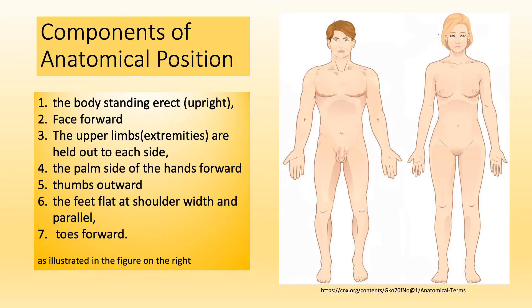What are the components of anatomical position? Let's start from the top and go to the bottom so we will not forget anything. The body is standing erect or upright. Face forward. Upper limbs or extremities are at each side. Note: I said upper limbs, not arm — because arms are a different body part. Arms refer in anatomy to the body part from shoulder to elbow. However, upper limbs refer to the body part from shoulder to end of the fingertips. The palm side of the hands are forward. Thumbs outward. The feet flat at shoulder width and parallel to each other, and toes forward.